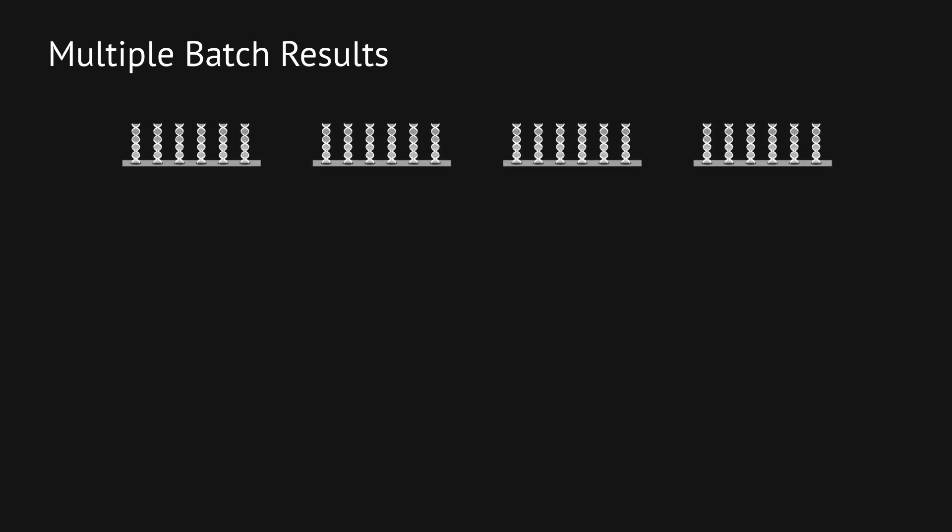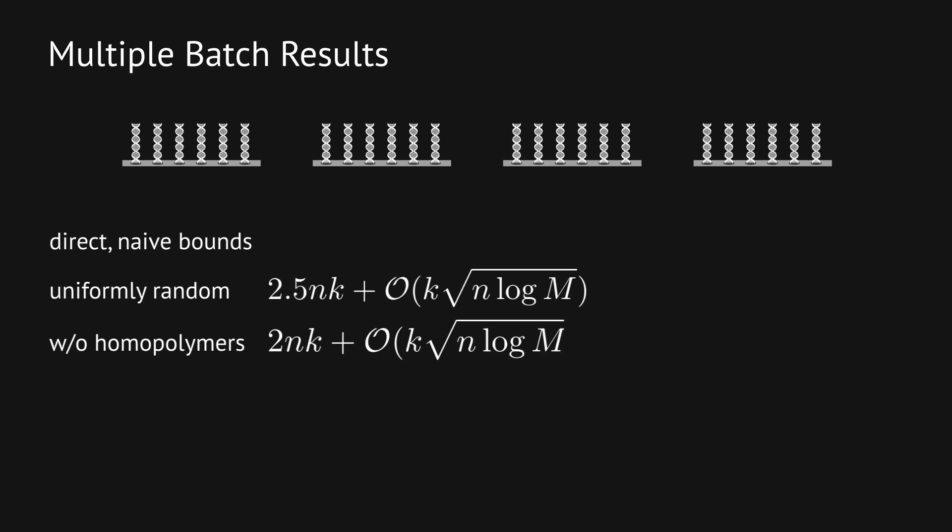Storing a lot of data means that we need to synthesize a lot of strings. Each machine can only create so many at one time and we have to split them into batches. Naively, the cost for k batches would be k times the cost of a single batch for either unrestricted strings or strings without homopolymers.